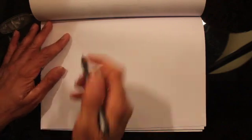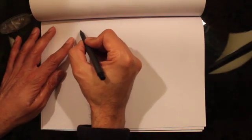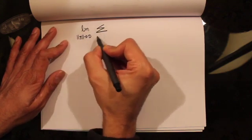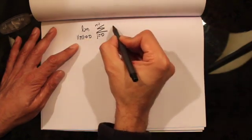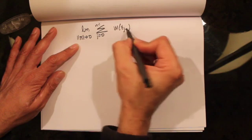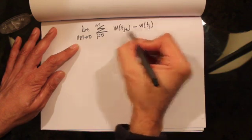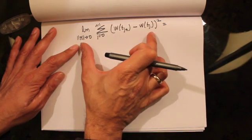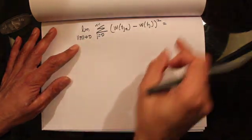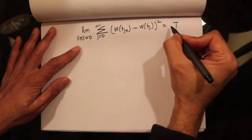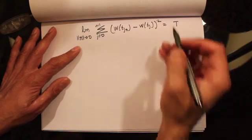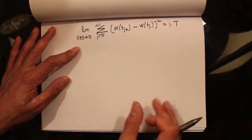In the last lecture we talked about quadratic variation for Brownian motion. The quadratic variation is given by the limit as the largest time step goes to zero of the sum from j equals zero to n minus 1 of (W(t_{j+1}) minus W(t_j)) squared. As we make the time step smaller and smaller, this goes to t almost surely — Brownian motion accumulates quadratic variation at 1 per unit time.